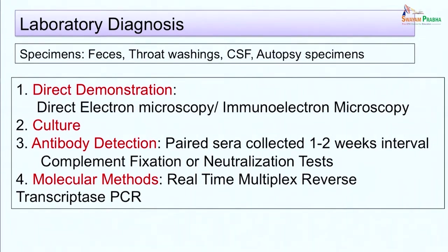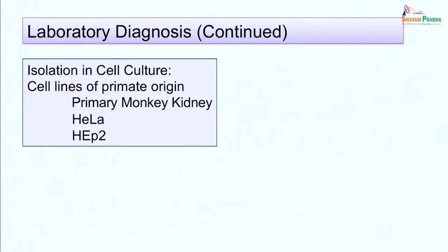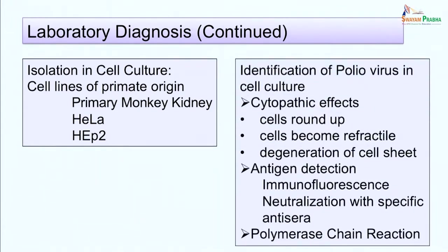The virus can be isolated only in cell lines of primate origin. Commonly used cell cultures are primary monkey kidney cells, HeLa, and HEp-2 cells. Virus growth is identified by typical cytopathic effects: the cells round up, become more refractile, and there is degeneration of the entire cell sheet. Virus growth can also be confirmed by antigen detection using immunofluorescence or neutralization with specific antisera, and by polymerase chain reaction.